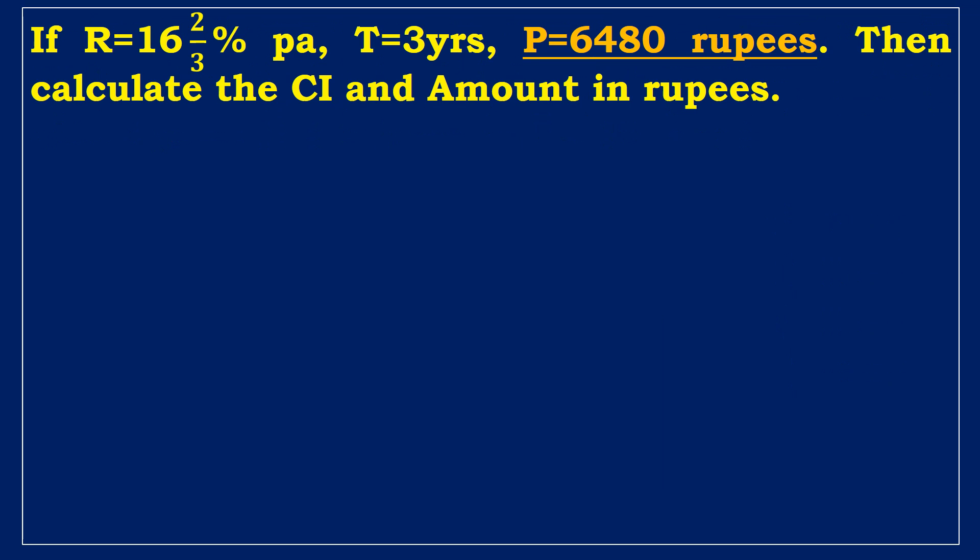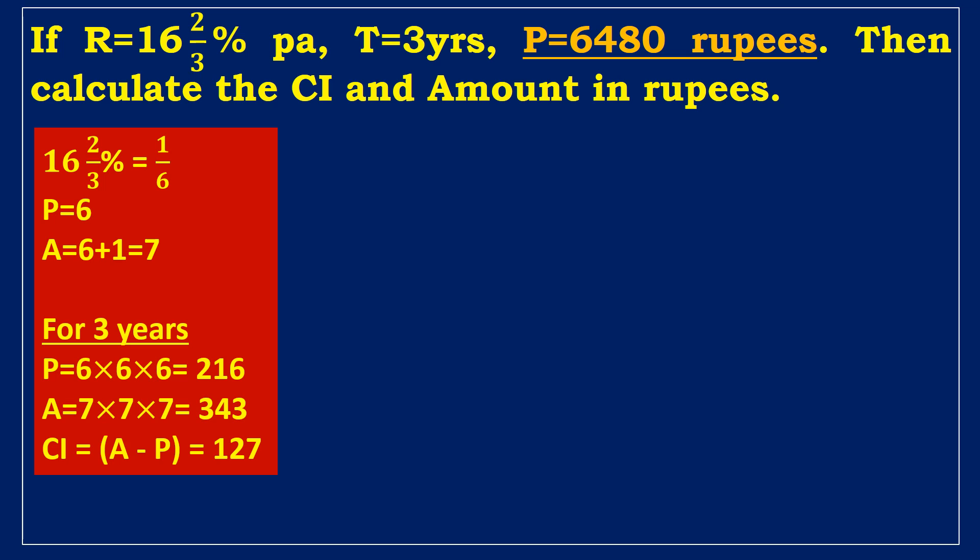Next example in compound interest. If the rate of interest equals 16 2 by 3% per annum, time equals three years, principal equals 6,480 rupees, then calculate the compound interest and amount in rupees. Given, the interest rate is 16 2 by 3%, which equals one divided by six. The principal in this example is six. Add numerator, denominator, and denominator values.